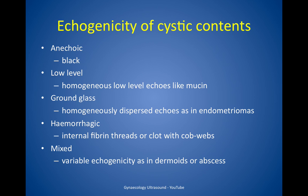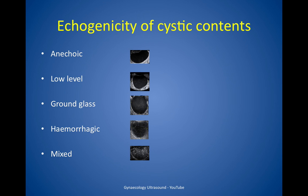How to describe the cyst contents: we look at the echogenicity — anechoic which is entirely black; low level echogenicity with some homogeneous low level echoes like mucin; ground glass echogenicity which is homogeneously dispersed echoes as in an endometrioma; hemorrhagic with some fibrin threads or clot; or mixed where the echogenicity is variable like in a dermoid or an abscess.